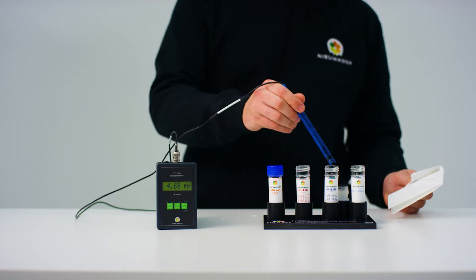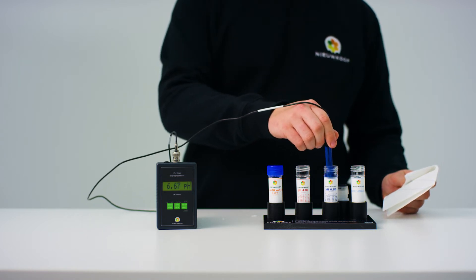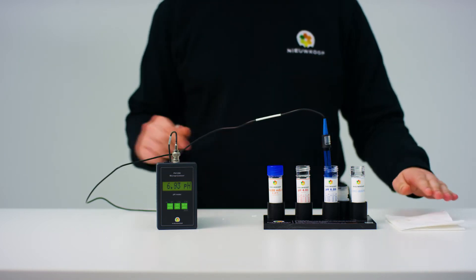Now place the sensor in the tube with pH 6.86 liquid. Stir briefly to remove any air bubbles.